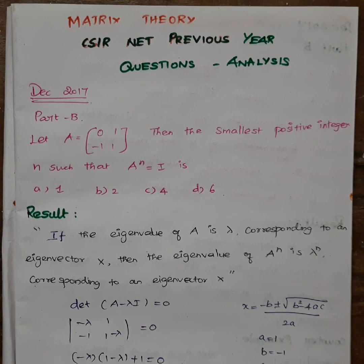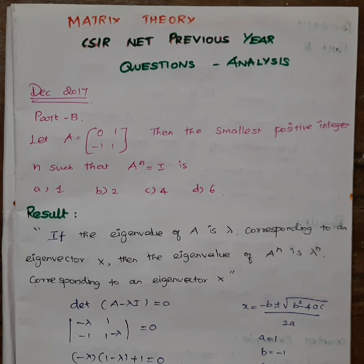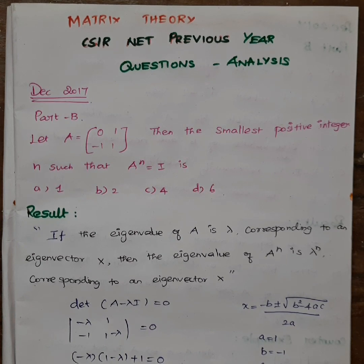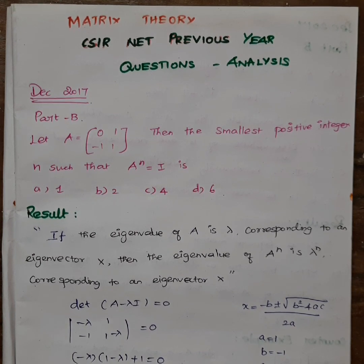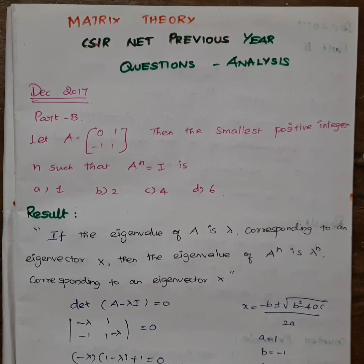Let A equal to [[0, 1], [-1, 1]]. Then the smallest positive integer n such that A^n equals I is — the options are 1, 2, 4, or 6. What condition gives us A^n equal to I?